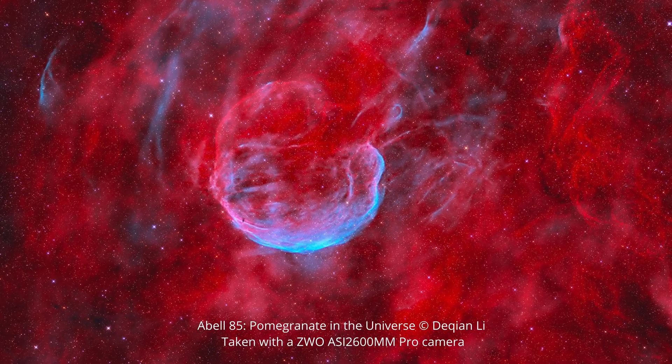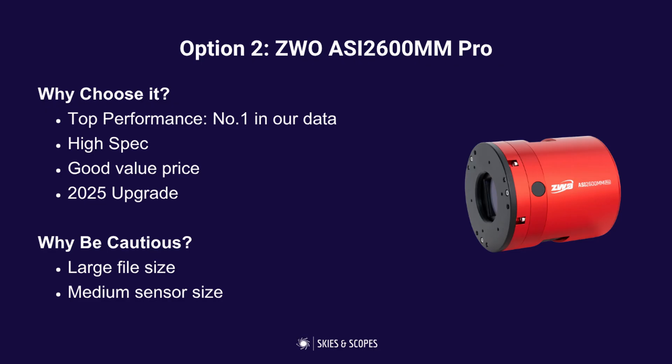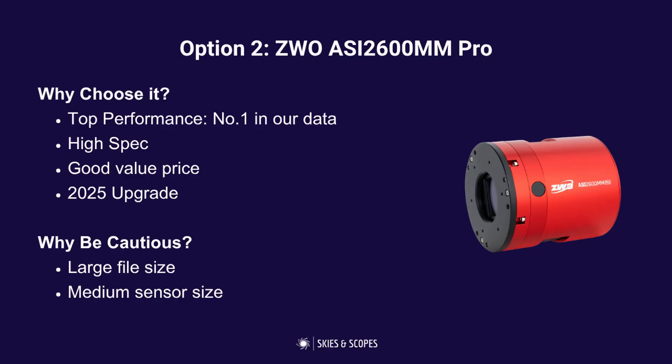The next camera is the one that keeps coming up top — the ZWO ASI 2600MM Pro, recently re-released in 2025. It's the top performer across all the data and clearly delivers on image quality. It's 26 megapixels, retails for just under $2,000 US dollars, and offers great value compared to the 6200 which is about twice the price. It has zero amp glow, so no extra dark frame step in your workflow, and its APS-C format sensor gives you a larger field of view than the 294.